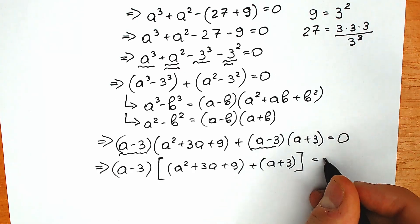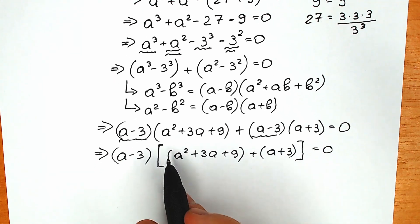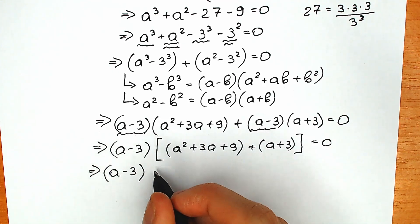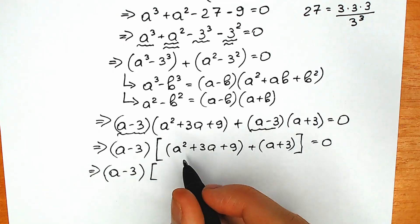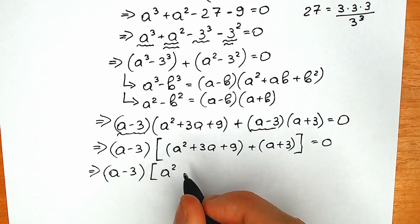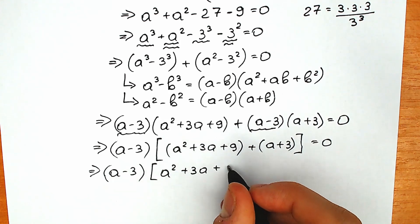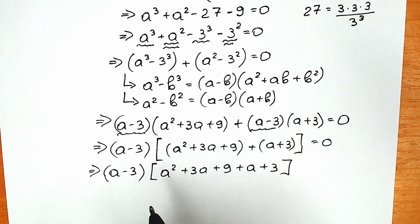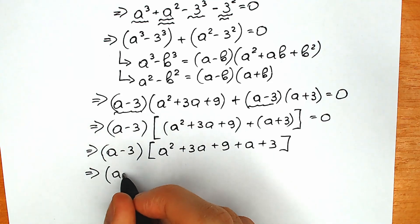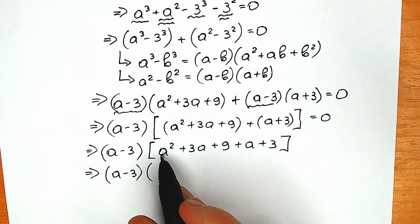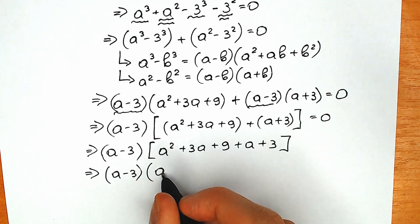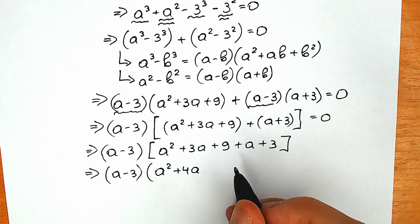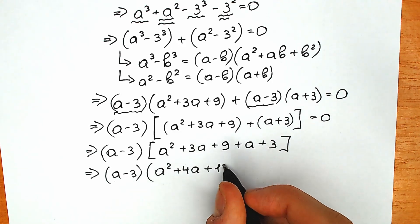Let's simplify this expression inside the brackets. So we have a minus 3 in the first parenthesis. And in the other parenthesis — since we have addition throughout, we can get rid of the inner parentheses — so we have a squared plus 3a plus 9 plus a plus 3. Let's simplify: a squared, then 3a plus a equals 4a, so plus 4a, and 9 plus 3 equals 12, so plus 12. Equal to zero.